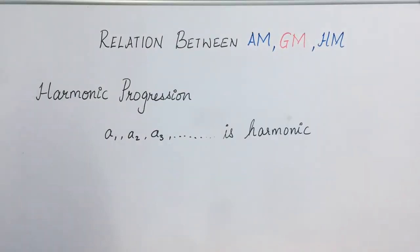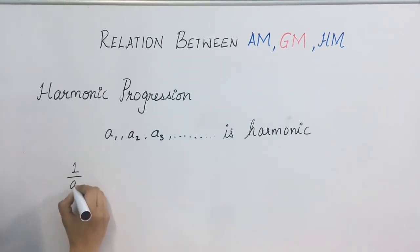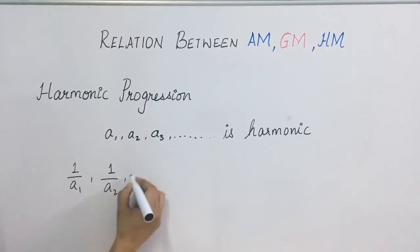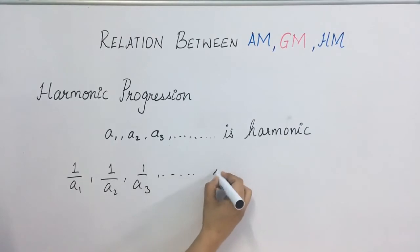A1, A2, A3, this will be called harmonic progression if 1 upon A1, 1 upon A2, 1 upon A3 is an AP. That is, we can say that A1, A2, A3 will be a harmonic progression.